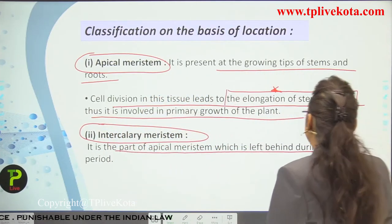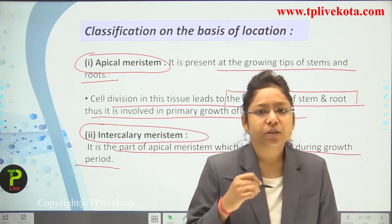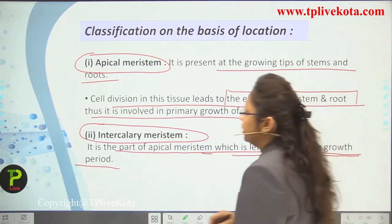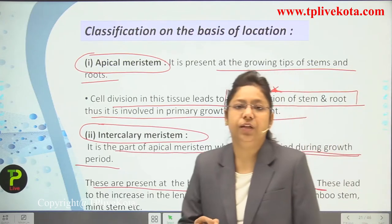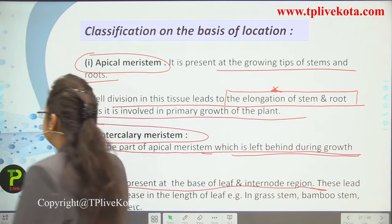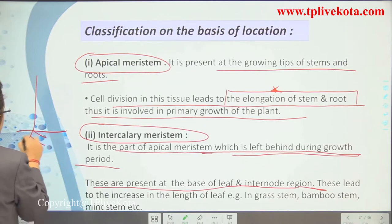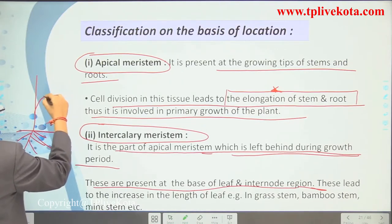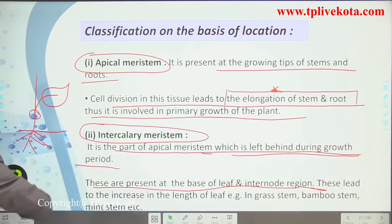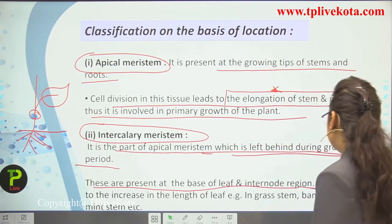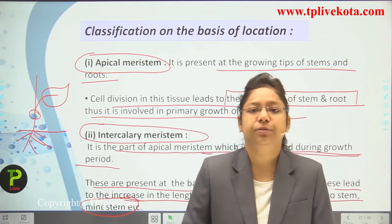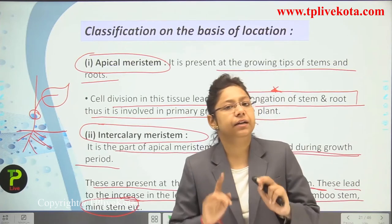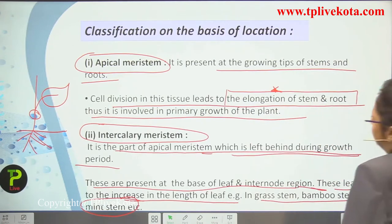Second, intercalary meristem — it is the part of the apical meristem left behind during the growth period. It is present at the base of the leaf and internode region. These lead to increase in length of the leaf. Examples include grass stem, bamboo stem, and mint stem.